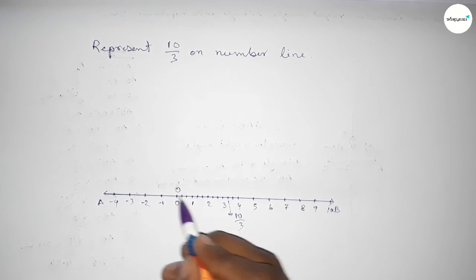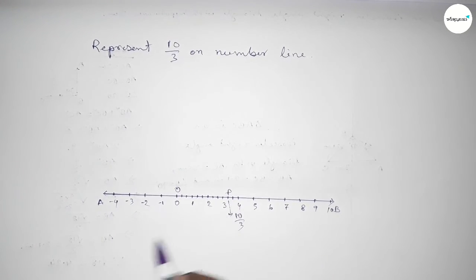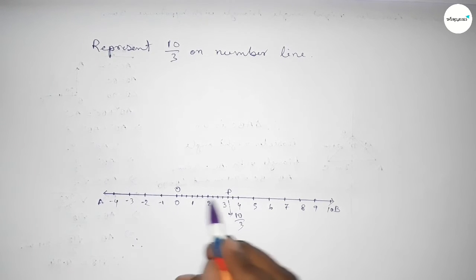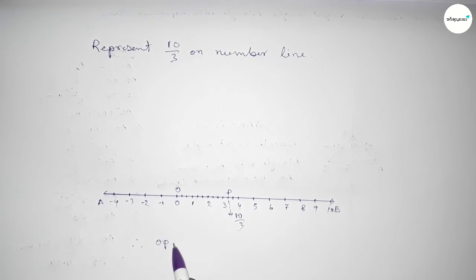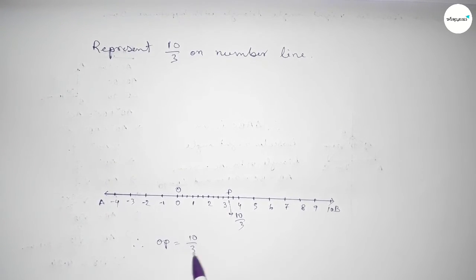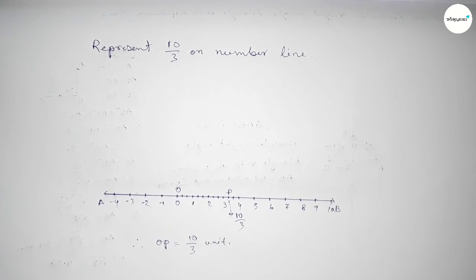We take point O and point P, so therefore OP equals 10 over 3 units. That's all — thanks for watching, please share it with your friends, thanks!